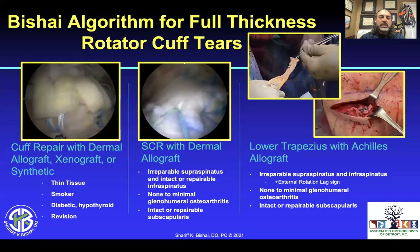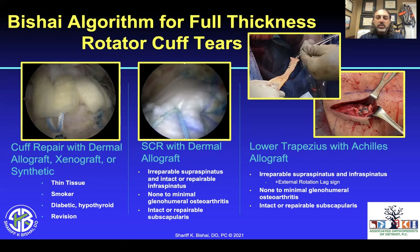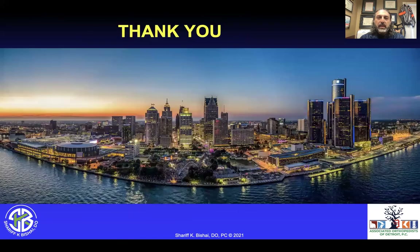This is my personal algorithm. If I have a repairable tear with poor tissue, or the patient is a smoker, diabetic, has thyroid issues, or is a possible revision, I'll do a cuff repair with some type of dermal allograft, xenograft, or synthetic. If I have an irreparable supraspinatus with intact or repairable infraspinatus, minimal to no glenohumeral arthritis, and intact or repairable subscapularis, I'll do an SCR with dermal allograft. Finally, if there is an irreparable supraspinatus and infraspinatus with an external rotation lag sign, no to minimal glenohumeral arthritis, and an intact or repairable subscapularis, I'll go with the lower trapezius transfer with Achilles allograft. Thank you.